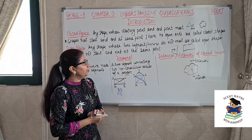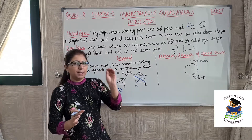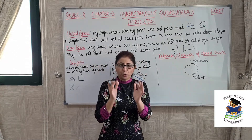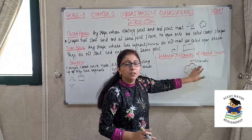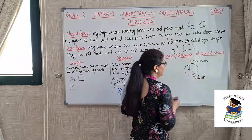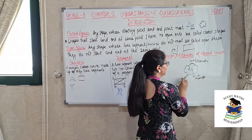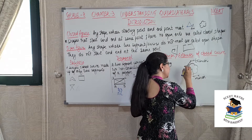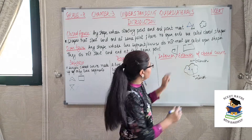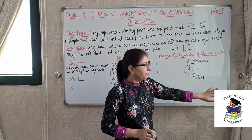So next important topic is the interior and exterior of a closed curve. The figure should be closed — meaning starting and ending point should be same. Any point or region inside your closed figure is called the interior. For example, if point A lies inside the boundary of the figure, then A is in the interior. And all the outside region is the exterior — so if point B lies outside the figure, this is the exterior of your closed curve.